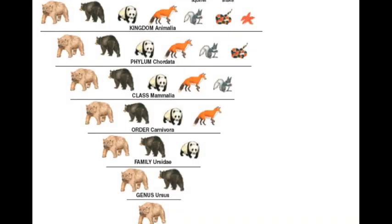If we look at this example, we start with kingdom Animalia — we've got the grizzly bear, black bear, panda, fox, squirrel, coral snake, and sea star. If we break it down into phylum Chordata, meaning it has a spinal cord, we leave off the sea star because it does not have a spinal cord. Moving to class Mammalia, a snake is a reptile, not a mammal, so it's no longer in this class. Everybody in this class is a mammal.